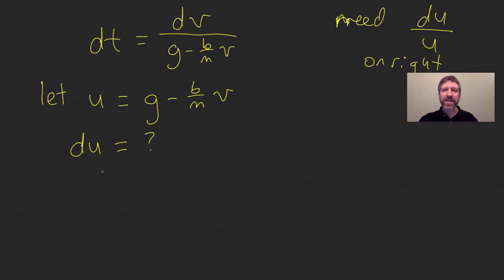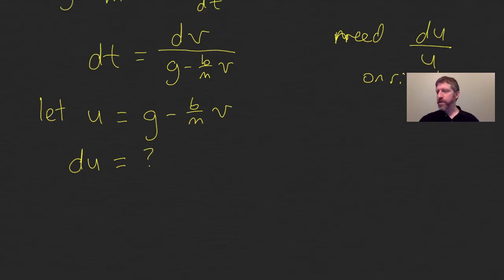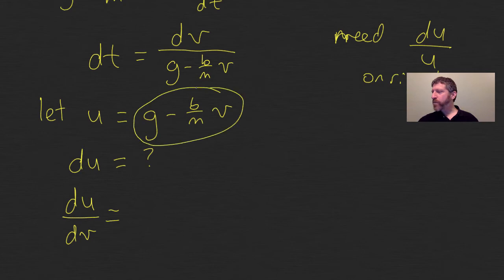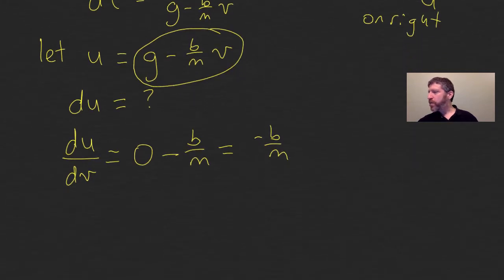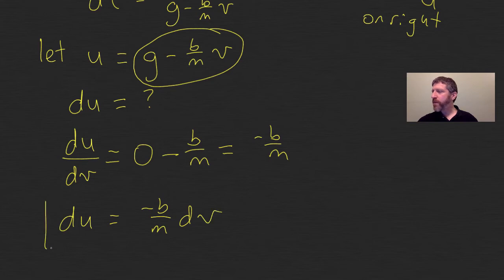If you don't know how to find du from this expression, here's an easy way to do it. You just find du dv. In other words, the first derivative with respect to v of u. Here's u right up here. So I want to find the first derivative of that with respect to v. What's the first derivative of a constant with respect to v? That's just zero. What's the first derivative of this with respect to v? That's just b over m. So we can see that the du dv is just negative b over m. Then to find du, du is just negative b over m times dv. We just multiply both sides by dv. So I found du.